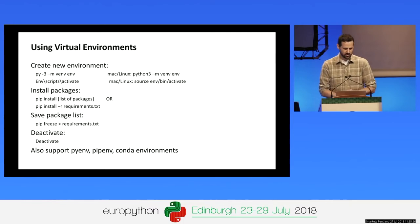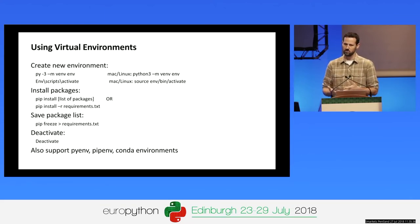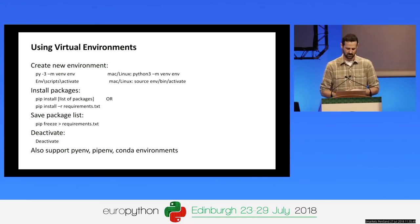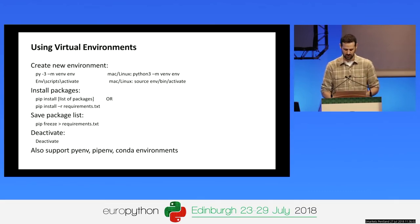A lot of people check in a requirements.txt file into their repo to package up Python dependencies. You can pip install with 'pip install -r requirements.txt', and generate one using 'pip freeze'. When you're done, type 'deactivate' from the terminal. We also have support for pyenv, pipenv, and conda environments in VS Code — they all show up in that interpreter list.